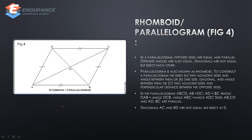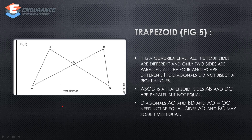The next one is rhomboid or parallelogram. The opposite sides are equal and parallel, and the opposite angles are equal. The diagonals bisect each other. Parallelogram is the general name — rhombus is a special case. The next one is trapezoid, which is a quadrilateral where four sides are different and only two sides are parallel, four angles are different, and the diagonals are not equal.